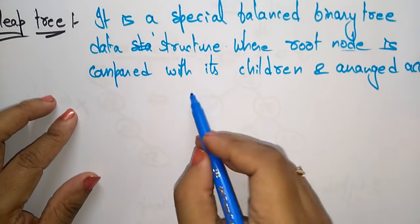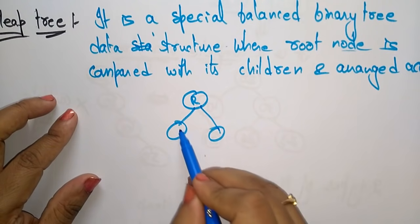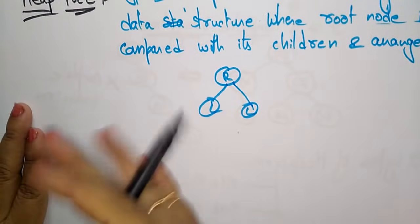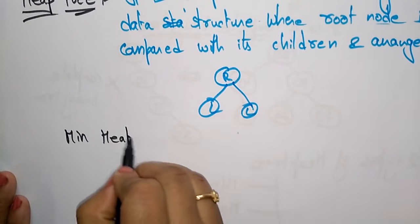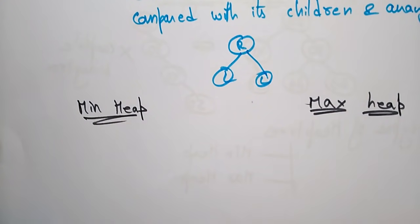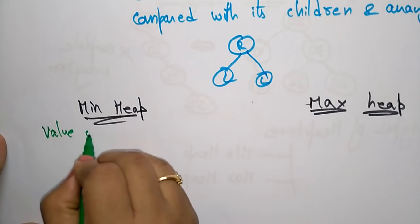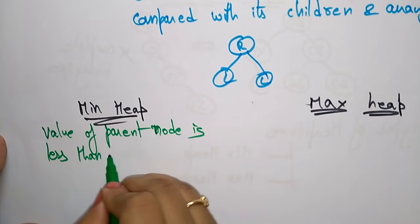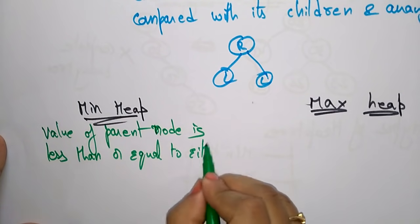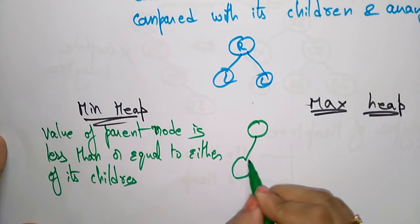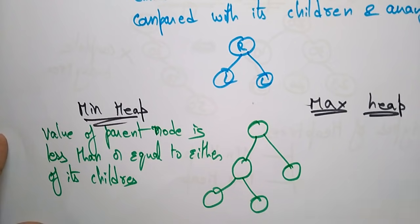A heap tree is of two types: min heap and max heap. In a minimum heap tree, the value of the parent node is less than or equal to either of its children. So the root node should be less than either of its children.